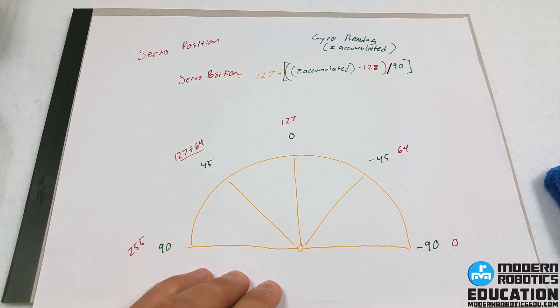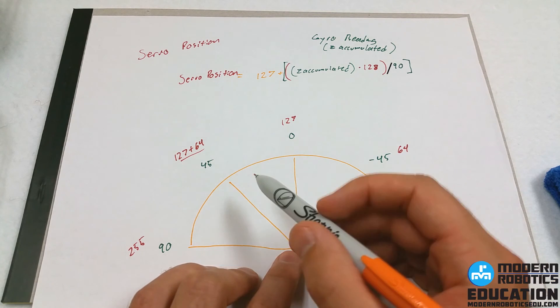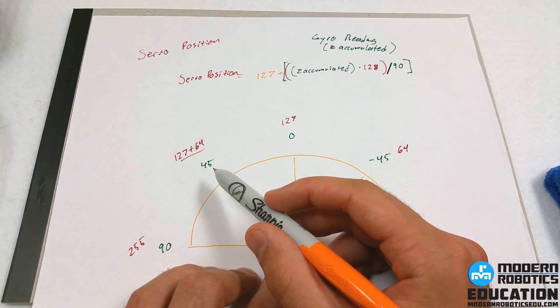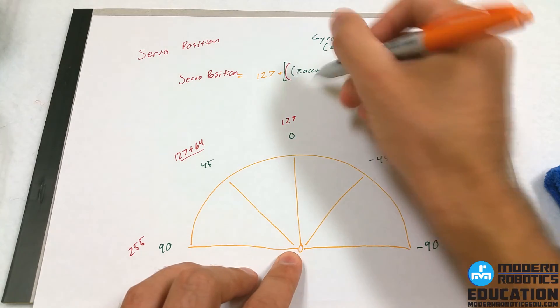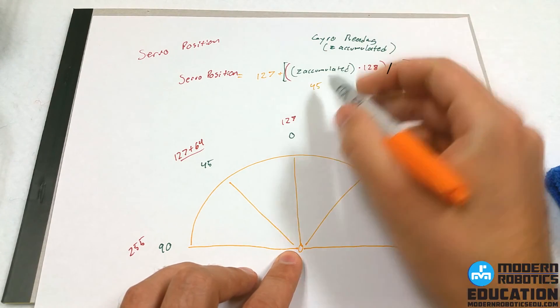So we can test this out. We can say, well, if it's, let's say 45 degrees gyro reading. So let's say it's 45 degrees over here, so 45 degrees would be our Z accumulated.